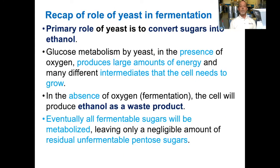To recap the role of yeast in fermentation: the primary role of yeast is to convert sugars into ethanol. Glucose metabolism by yeast in the presence of oxygen produces large amounts of energy and many different intermediates that the cell needs to grow. In the absence of oxygen — fermentation — the cell will produce ethanol as a waste product. Eventually, all the fermentable sugars will be metabolized, leaving only a negligible amount of residual, unfermentable pentose sugars.